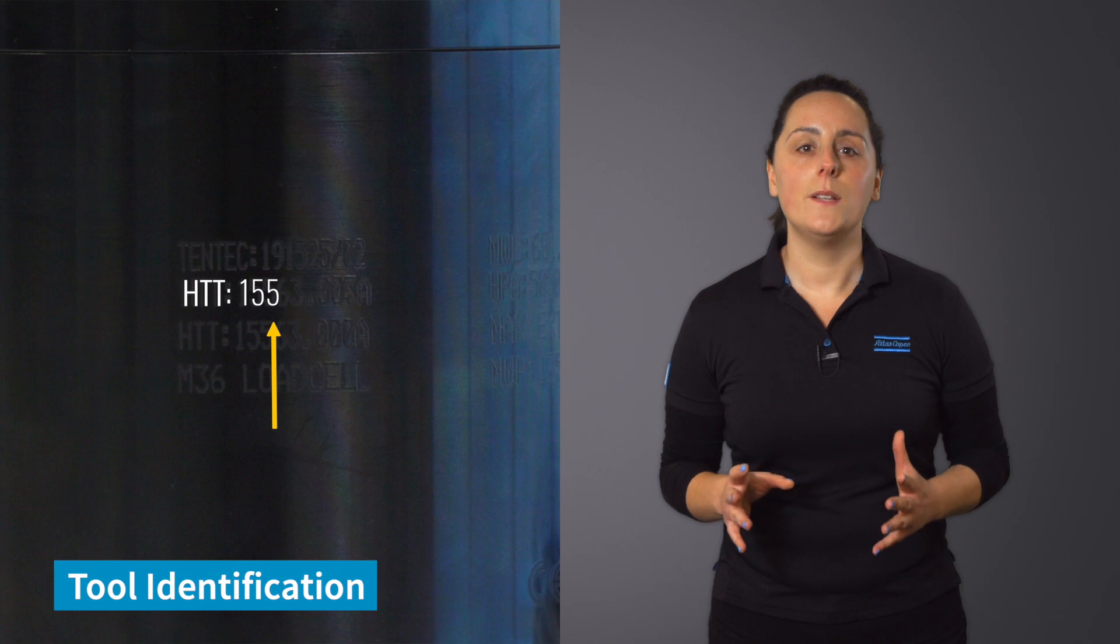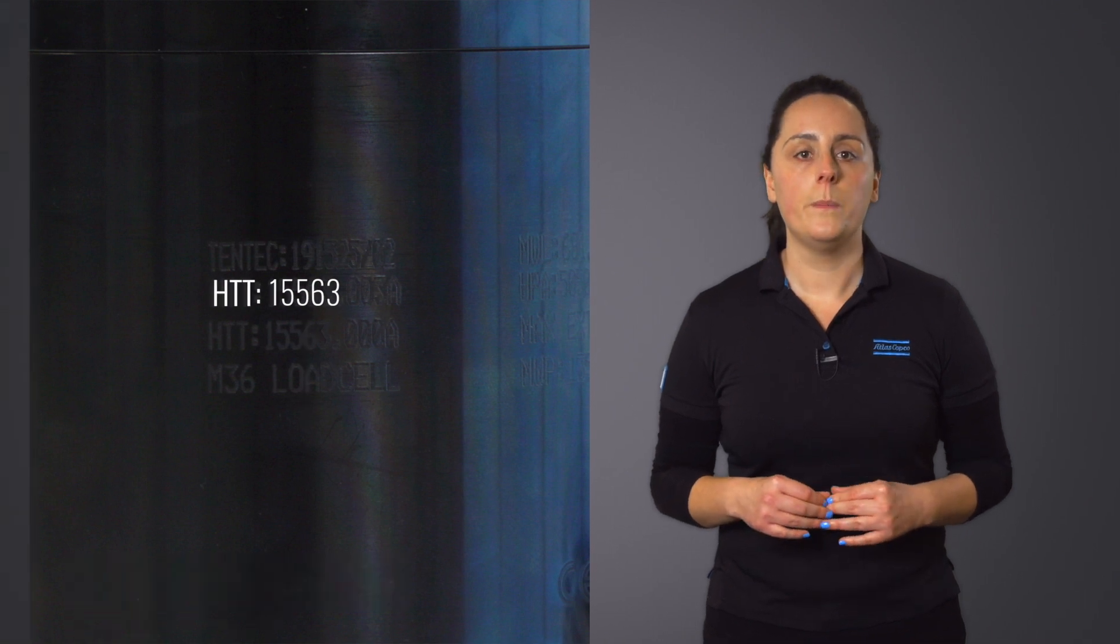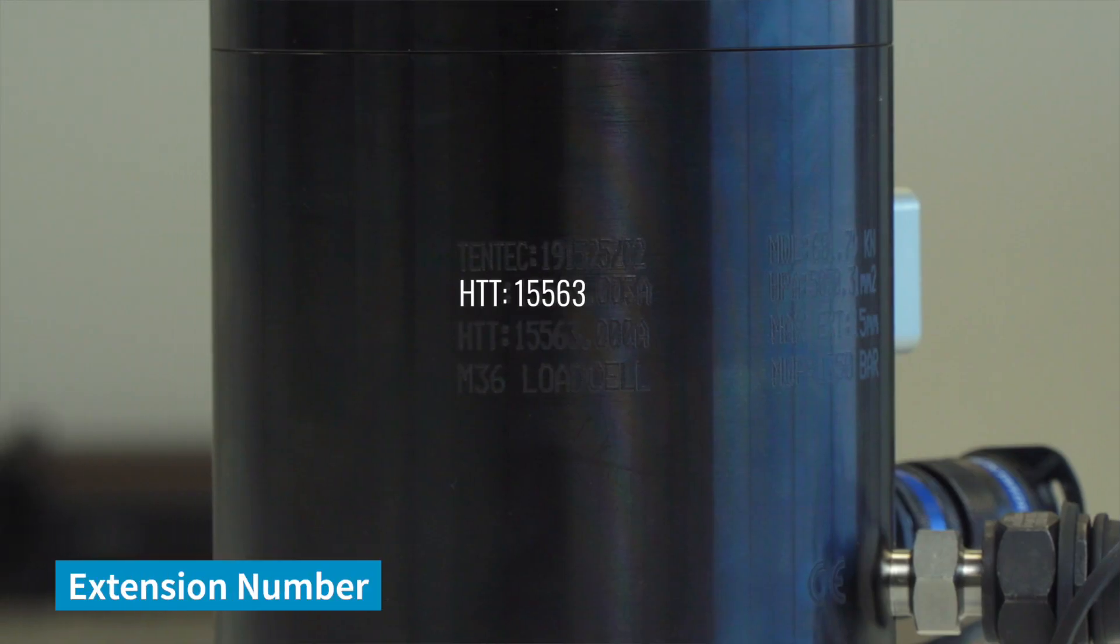The second part is the main number which identifies the tool. The third part of the number is called the extension number. This can generally indicate the size of the tool or the component.